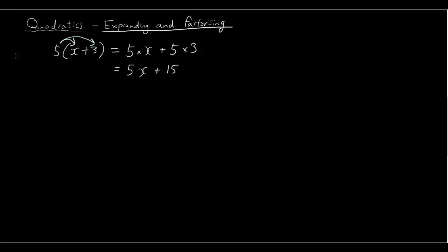Okay, so that's simple expanding and factorizing is the opposite of expanding. So if we have 5x plus 15 and we want to put it back into the brackets, then we look at the common factor between these two terms. And 5 is a common factor. So I take the 5 out, put it in front. 5 is actually the highest common factor. And then 5 times x is 5x, 5 times 3 is 15. So that's factorizing, putting it back into the brackets.